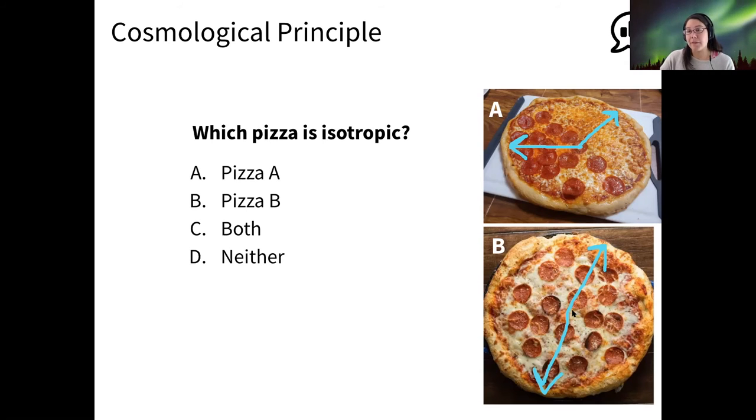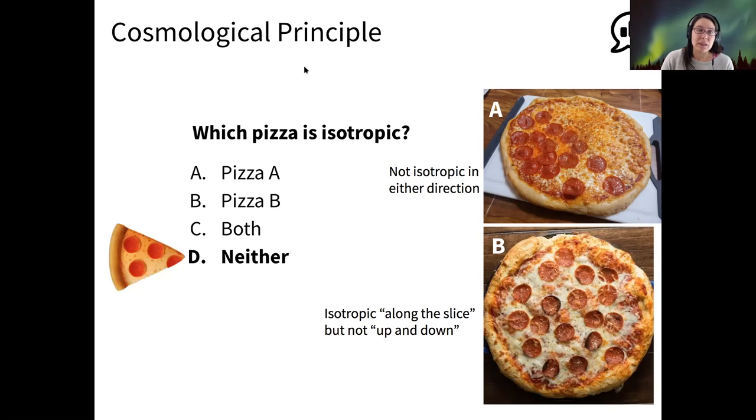But for pizza B, if I turn it flat and look at it from the edge, and I imagine that I am an ant digging a tunnel into the pizza, well, then it's not really isotropic in that direction. So I guess sort of neither pizza is isotropic if you're considering the whole three dimensional pizza. And for the universe, we should consider three dimensions because we do live in a three dimensional universe.